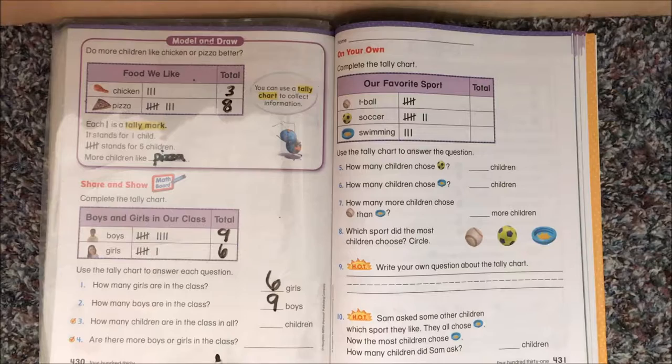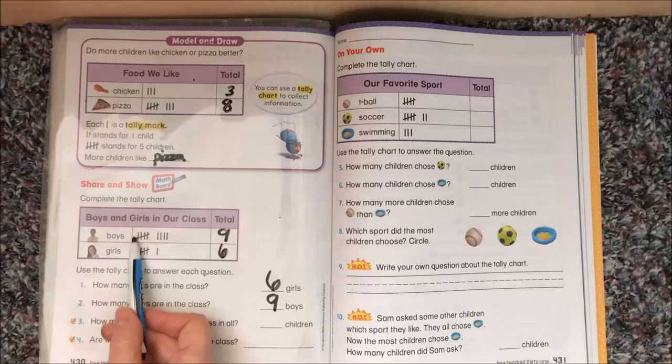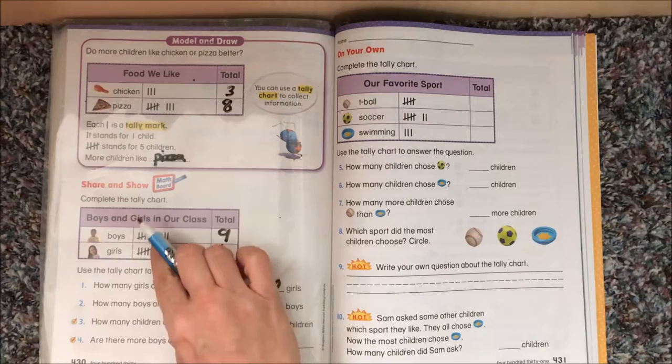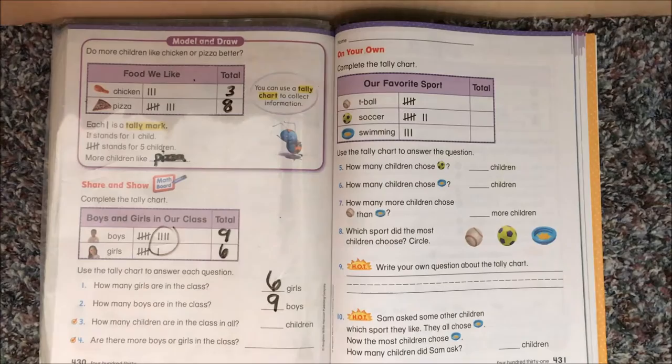How many children are in the class in all? Now you could add. Or you could go like this: 5, 10. And then you have a couple of options. You could count on 11, 12, 13, 14, 15. Or you could go, you know what? I could pick that up and move it right up here and cross. And that would make another 5. So I could just count 5, 10, 15. Either way, we wind up with 15.